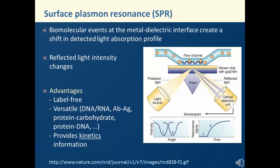For example, we can immobilize antibodies on the metal film and introduce their corresponding antigen in a liquid sample. As the antibody captures the antigen, the SPRI angle for the interface changes, which leads to a change in measured reflectivity. Notice that in this process, no external labels are needed to generate a detection signal. Therefore, the SPRI technique is entirely label-free. Another advantage of SPRI is that any type of interactions can be monitored, including those between nucleic acids, antibody and antigen, protein and carbohydrate, and adsorption of materials on the surface as well.